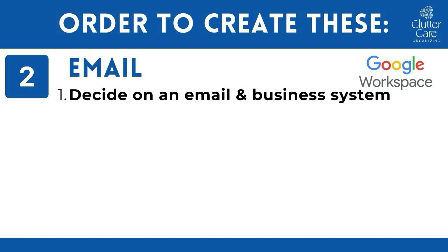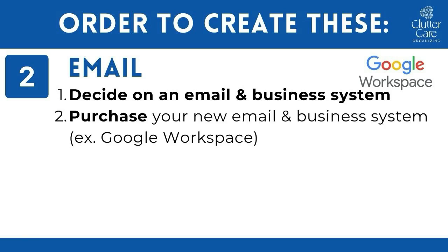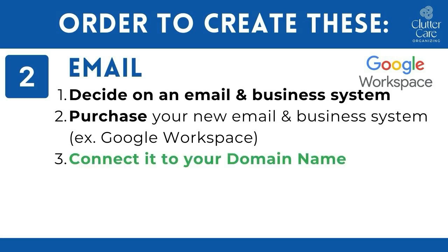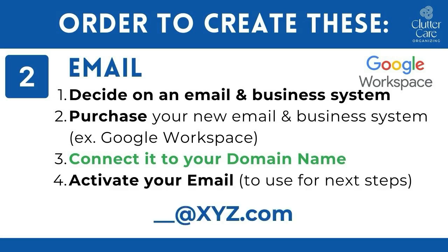Next, you need to purchase your email account and business system that go together. So you're going to decide on an email and business system that is appropriate for you, your company, and your employees — ideally one that you already know how to use. Then you're going to purchase your new email and business system, such as Google Workspace. You're going to connect it to your domain name that you've already purchased. And then you're going to activate your email address so that you have a functioning email address to work with for your business.